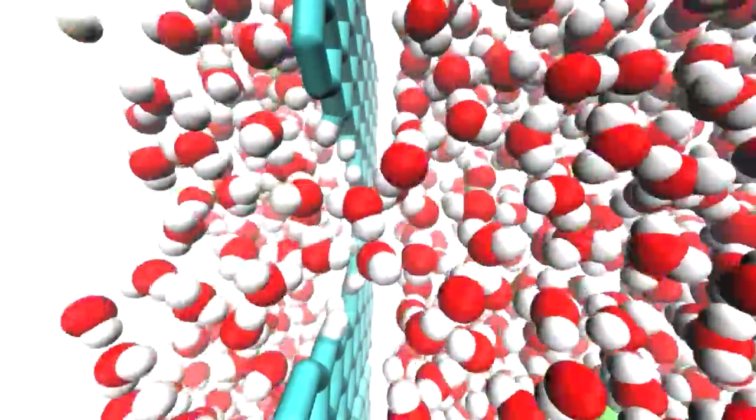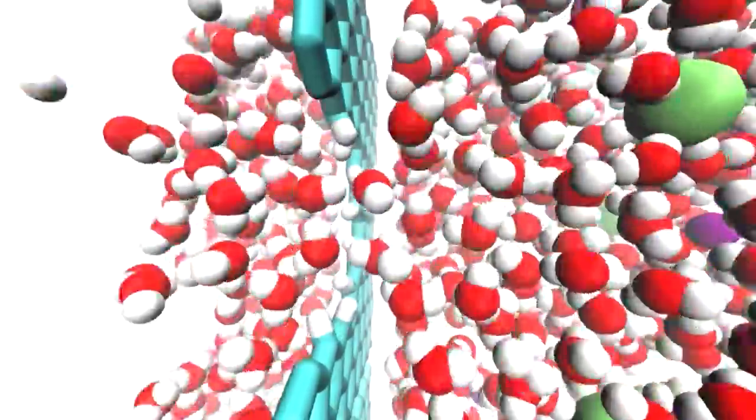And because graphene is one of the strongest materials known, this membrane could withstand the pressures required for water desalination.